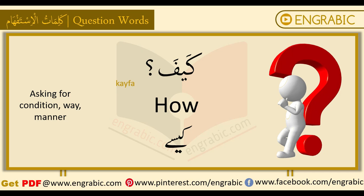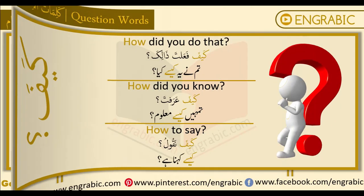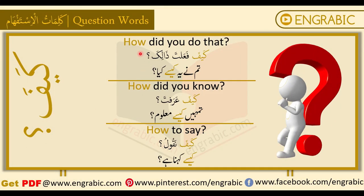The first word we are going to learn is 'kaifa.' Kaifa in English is called 'how,' and in Urdu it is called 'kaise.' We may use it for asking the condition, the way, or the manner. For example: 'How did you do that?' — kaifa fa'alta.